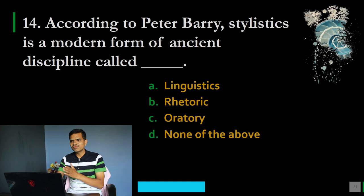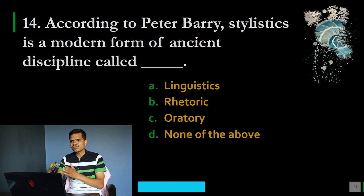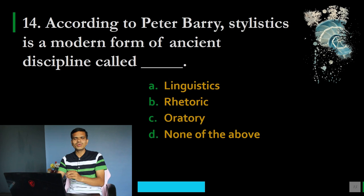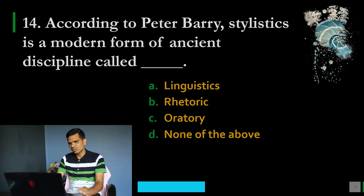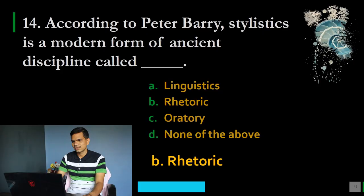Question number 14: According to Peter Barry, stylistics is a modern form of an ancient discipline called what? Options: A. Linguistics, B. Rhetoric, C. Oratory, D. None of the above. The correct option is B, Rhetoric. In the style of Plato or Aristotle, stylistics is known as rhetoric. Today we have the term stylistics, but it is based on the science of rhetoric.